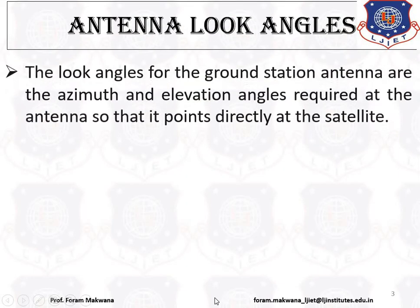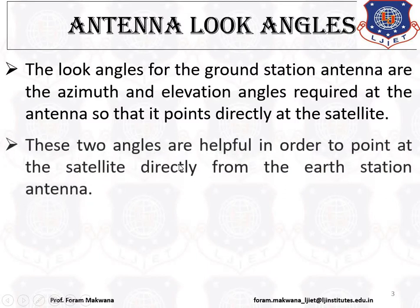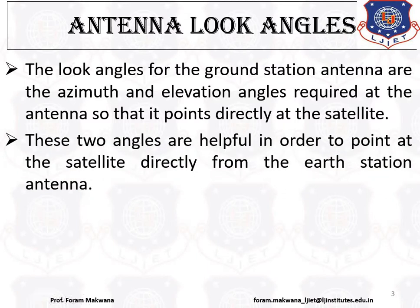First, focusing on the antenna look angles. There are two most important look angles: the first one is azimuth and the second one is elevation angle. Azimuth angles are mostly a horizontal angle and the elevation angle is a vertical angle. These two angles are required at the antenna so that it points directly at the satellite.